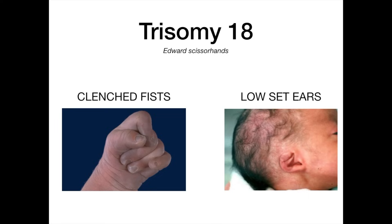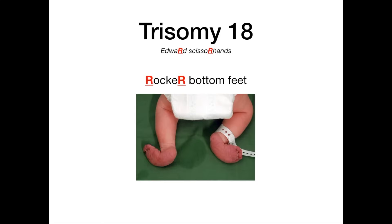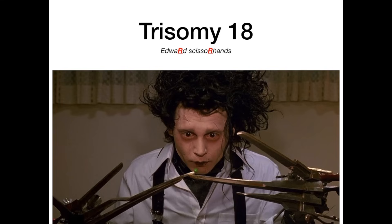There is one more feature to know: rocker bottom feet. To remember it, I capitalize the R's in Edward and Scissorhands — the R in Edward and the R in Scissorhands reminds me of rocker bottom feet, which are an up-slanting, improperly shaped foot. So trisomy 18 has three things to know: clenched fists, low-set ears, and rocker bottom feet. Remember all of these with Edward Scissorhands, and 18 for Edward with matching E's.